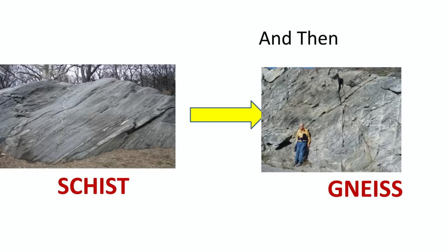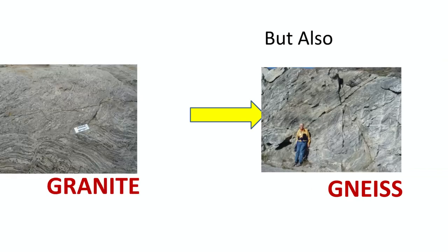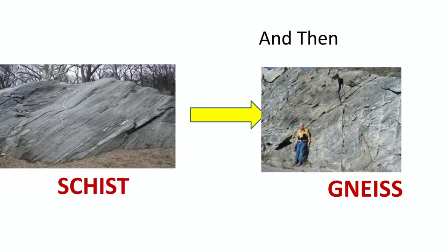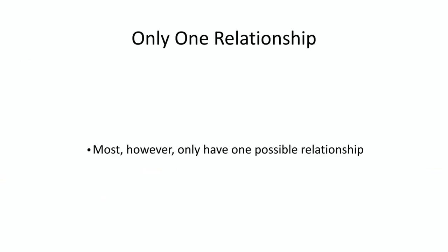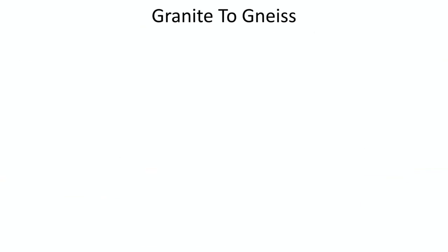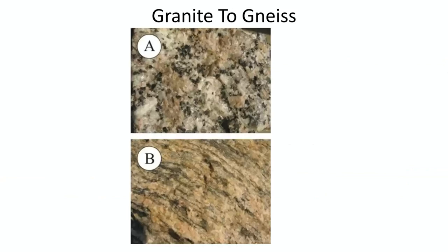Schist can become gneiss, but also granite can become gneiss. So gneiss is another example of something that can come from a metamorphic rock or an igneous rock. Most have only one possible relationship, but some can have multiple.